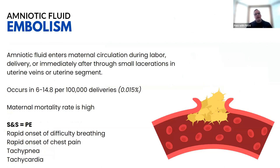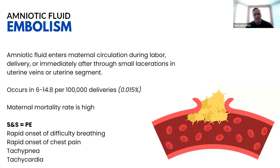Amniotic fluid embolism occurs when amniotic fluid enters maternal circulation during labor, delivery, or immediately after, through small lacerations in the uterine veins. It occurs in 6 to 14.8 per 100,000 deliveries — just over one one-hundredth of a percent — making it rare. However, the maternal mortality rate is high, which is why it's in the National EMS Education Standards and on the National Registry exam. Signs and symptoms are the same as with a pulmonary embolism: rapid onset of difficulty breathing, chest pain, tachypnea, and tachycardia.